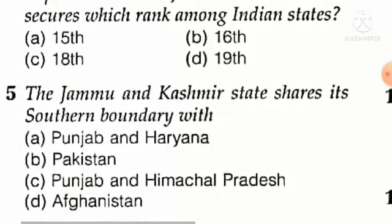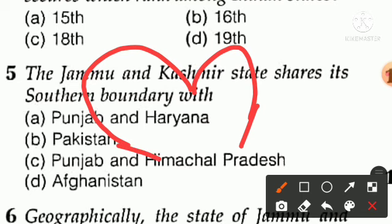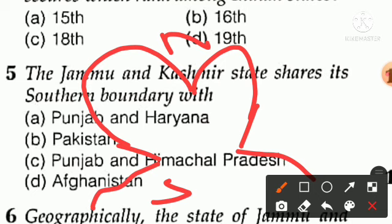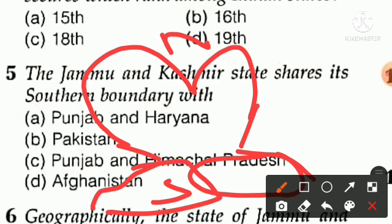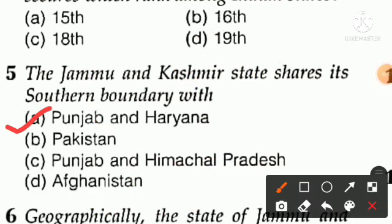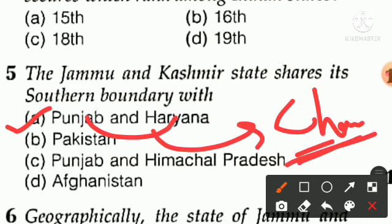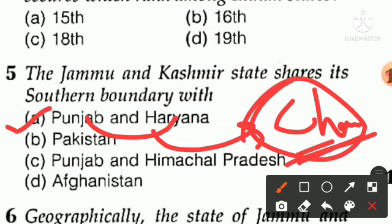The answer is 7th. Question five: Jammu and Kashmir shares its southern boundary with which states? Looking at the southern part, option A is right — Punjab and Haryana. J&K touches Punjab and Haryana in the south. Chandigarh is the capital of both Punjab and Haryana.